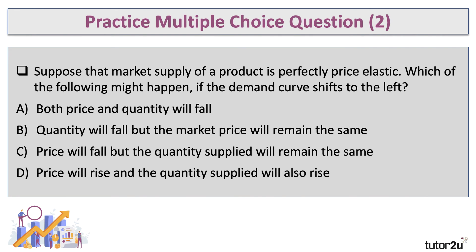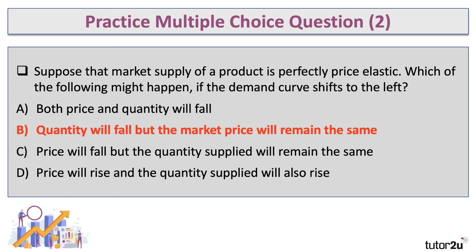Here's the second multiple choice question. Suppose that the market supply of a product is perfectly price elastic. Which of the following might happen if the demand curve shifts to the left? Press pause and have a go. The answer is: the quantity will fall but the price will stay the same. Whenever there's a shift in demand with perfectly elastic supply, the market price stays the same — there's just a fall in quantity supplied.